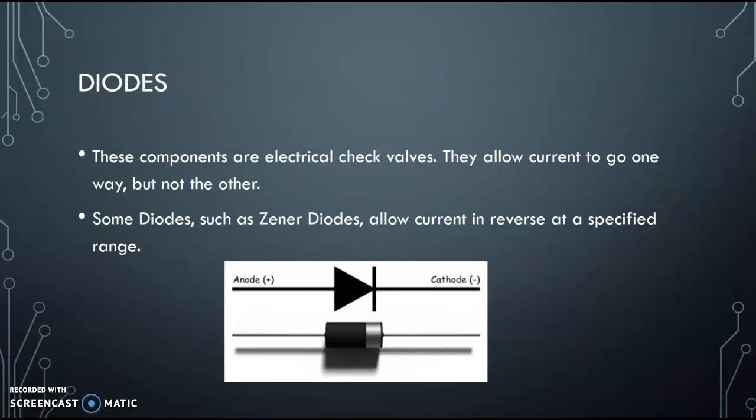Diodes, these are like electrical check valves. They allow current to go one way, but not the other. We talked a little bit about this when we talked about alternator operation. Again, these little diodes right here will let the current go this way, but not that way. Some diodes, such as Zener diodes, allow current to go in the reverse direction at a specified range, but we don't use those a whole lot for automotive purposes. These kind of voltage regulators.